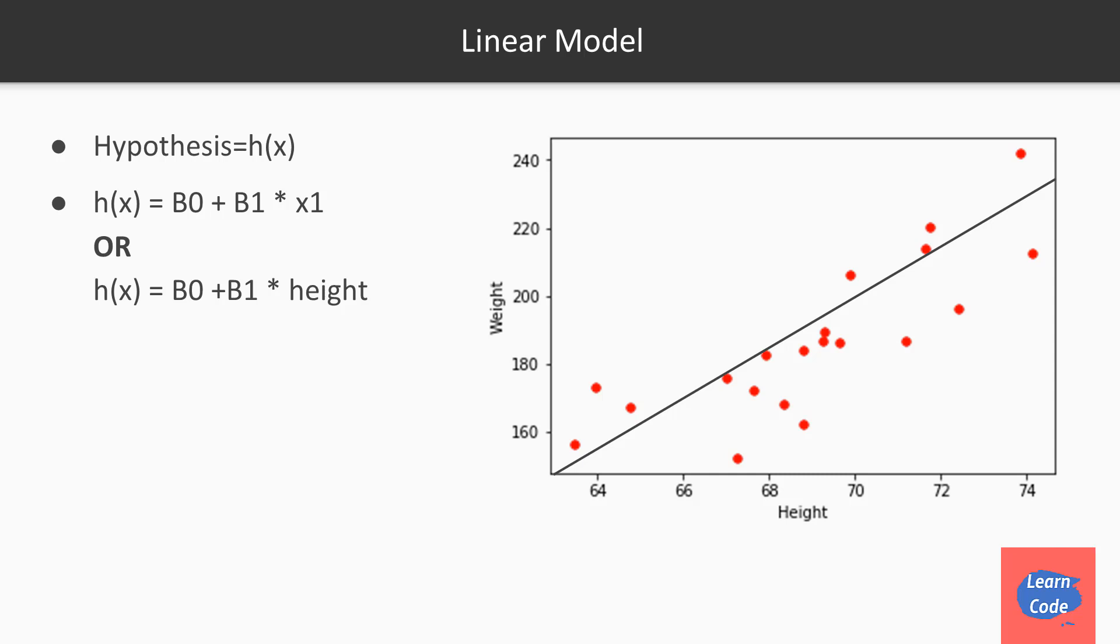b0 plus b1 into x1, or in our case, b0 plus b1 into height, since height is our x1 or the feature. If the line crosses through the origin, we'll have b0 value as 0, and the line is entirely represented by b1 into height. But as you can see, this is not the perfect fit.